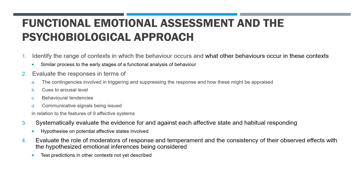We evaluate the responses in terms of the contingencies involved in triggering and suppressing the response and how these might be appraised. We take a particular context and think: how might that be evaluated by the animal? If we think the triggering stimulus could be appraised as a threat to the animal, we make an inference that this could potentially generate the state of fear. If we think it limits the animal's autonomy, we suggest it could create a state of frustration. We generate a list of all reasonable hypotheses on the basis of the contingencies. We look at cues to arousal level — things like piloerection, pupillary dilation, heart rate data — which tell us about how aroused the animal is. That can be important for distinguishing between an emotional response and a habitual response, because a habitual response often doesn't have the same level of arousal. If the level of arousal is inconsistent with the particular emotion we're inferring, we have to reject the hypothesis that that emotion is involved.